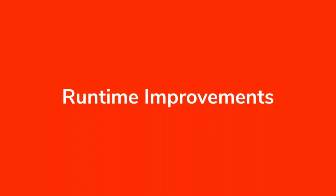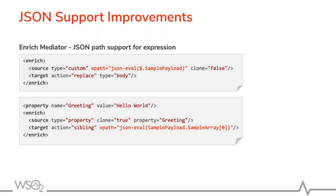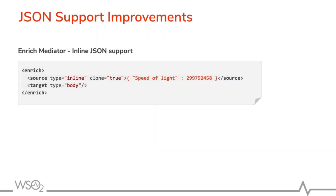Moving on to runtime improvements in WSO2 EI 6.5.0: we have provided native JSON support for a number of mediators. We already had JSON support, but we have improved it to be more performant and convenient. This is now provided in the iterate mediator, aggregate mediator, and enrich mediator — so whenever you want to process the payload, you can use JSON eval to access the payload more performantly. We have also provided inline specification of JSON payload in the enrich mediator when mapping through an inline type.